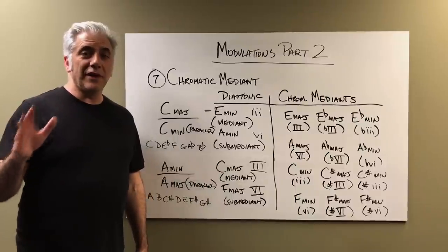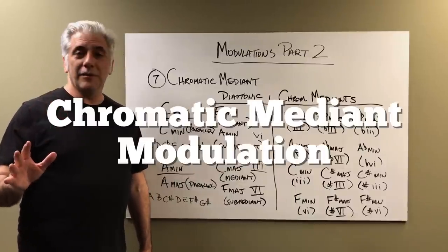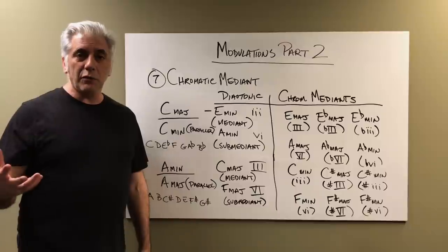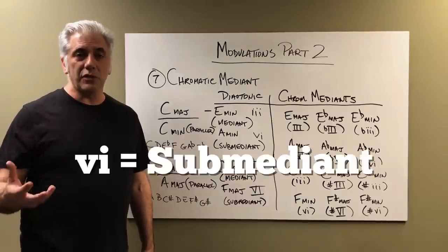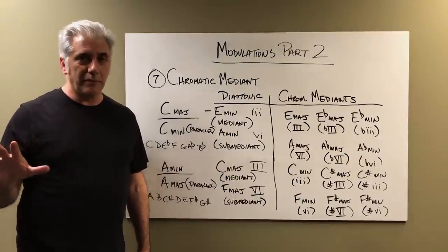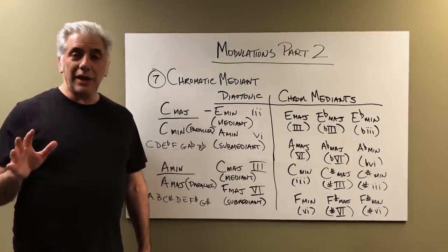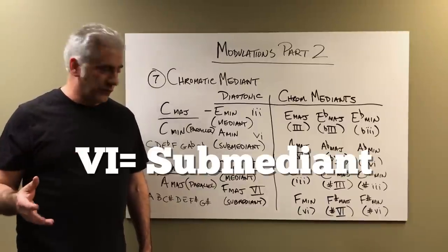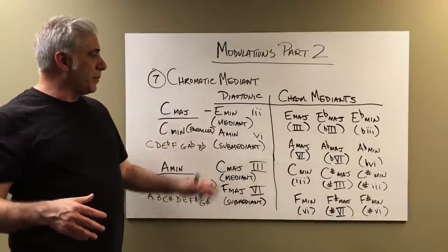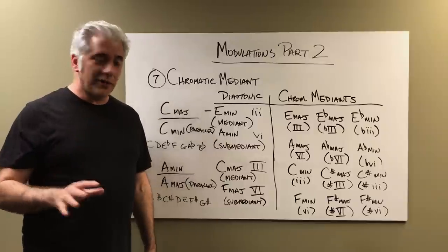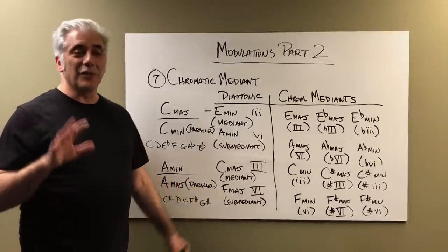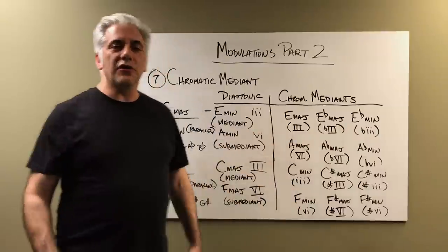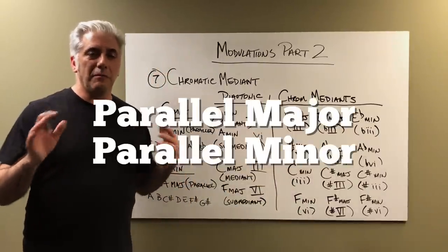Modulation number seven is the chromatic mediant modulation. Mediants deal with either the three chord, which is called the mediant, or the six chord, which is called the submediant. These are both in major keys. In minor keys, the mediant is the three chord and the submediant is the six chord. In a major key, both mediants are minor chords, and in a minor key, the mediants are both major chords. The tricky thing about this is that you have to understand something called parallel major and minor.